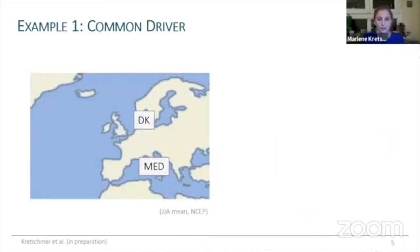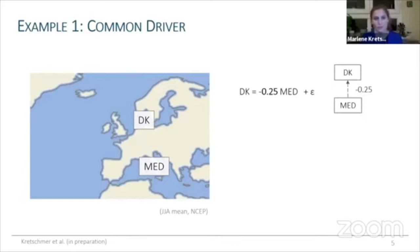To give some intuition of how we can combine scientific theory with data analysis, here is a simple real data example. I have data of precipitation in Denmark and the Mediterranean in summer, using ERA reanalysis data with all time series standardized. There is actually quite a strong statistical association between them, and if we assume linear dependence and regress Denmark precipitation on Mediterranean precipitation, we find a significant regression coefficient of minus 0.25.